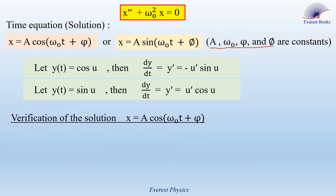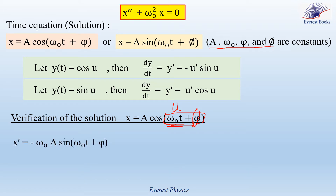Now, let's verify the solution x equals A cosine(omega 0 t + phi). Here, omega 0 t + phi is taken as u. The derivative of phi is 0 because it is constant, and the derivative of omega 0 t is omega 0. Taking the first derivative of the expression, x prime equals minus omega 0 A sine(omega 0 t + phi).